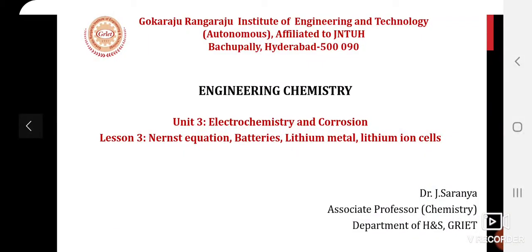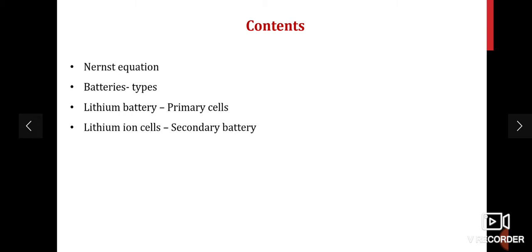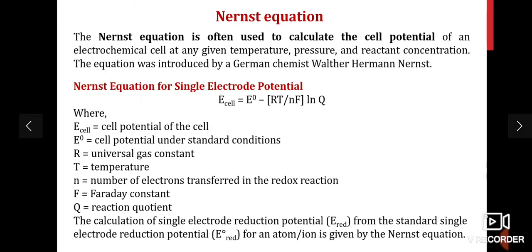Welcome students, welcome to Engineering Chemistry class, Unit 3, Lesson 3. In this lesson we are going to learn the Nernst equation and its derivation, the types of batteries, primary cells including the lithium battery, and secondary batteries including lithium ion cells.